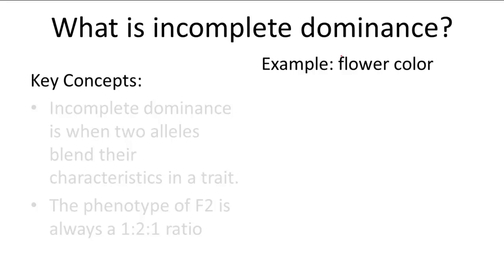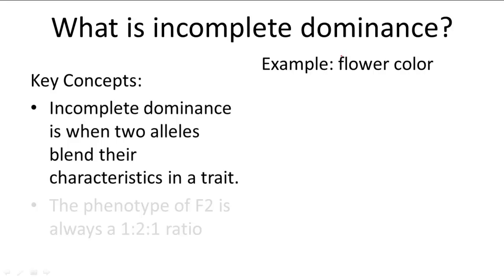Similar to codominance, incomplete dominance occurs when two alleles are not dominant over the other. But rather than both of them showing separately in the same phenotype, the alleles in incomplete dominance are sort of blended together to form a third type of phenotype.